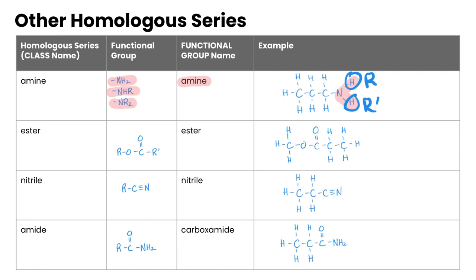Next, esters. They have a carbonyl group — a C double-bonded to O — which is then bonded to an oxygen, which is bonded to another alkyl group, with another alkyl group on the C=O side. This is called an ester in terms of its functional group name, and you can see that functional group in the molecule.